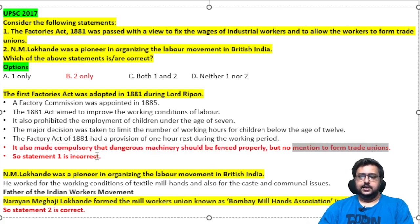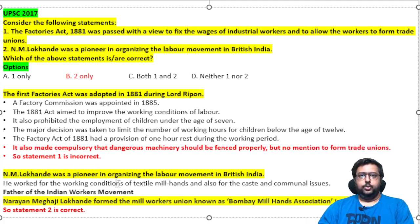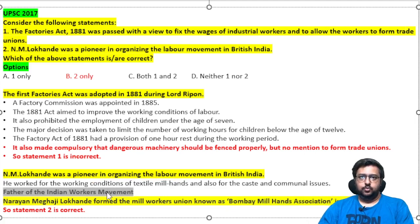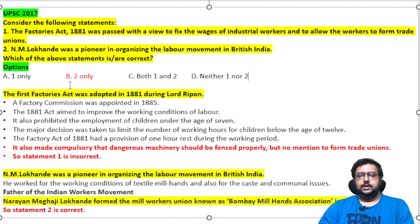NM Lokhande worked to improve the conditions of textile workers and mill workers. He established the Bombay Mill Hands Association in 1890 and is also called the Father of the Indian Workers' Movement. These are expected questions in the upcoming years, so please make a note. Statement 2 is correct.